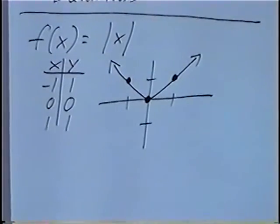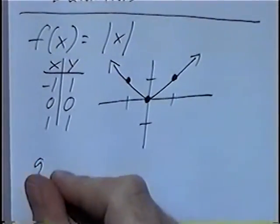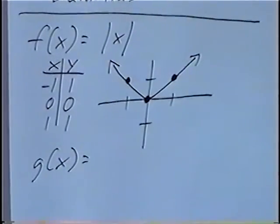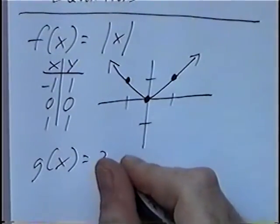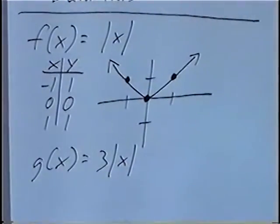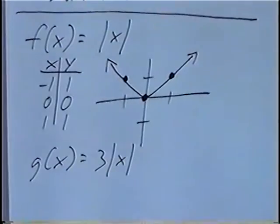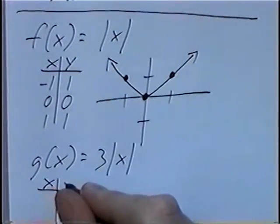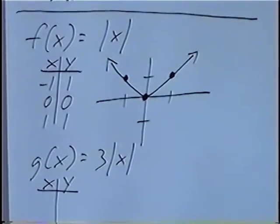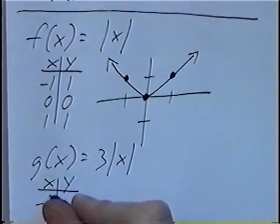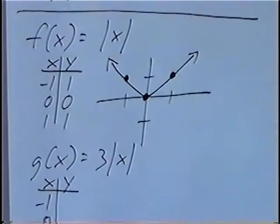Second and last question for the section: g(x) equals 3 times the Absolute Value of x. In this problem, we will take the Absolute Value and then multiply it by 3. Same steps — we will do a t-table with x and y values. Again, you can use different values for x, but the best ones to use for these problems will be negative 1, 0, and 1.